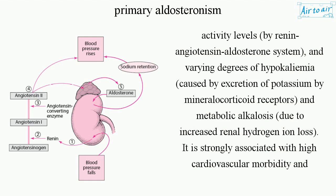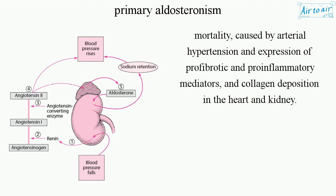Findings include varying degrees of hypokalemia caused by excretion of potassium via mineralocorticoid receptors, and metabolic alkalosis due to increased renal hydrogen ion loss. The condition is strongly associated with high cardiovascular morbidity and mortality caused by arterial hypertension and expression of profibrotic and pro-inflammatory mediators and collagen deposition in the heart and kidney.